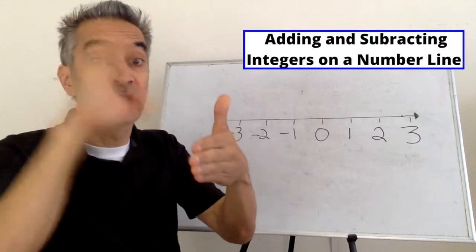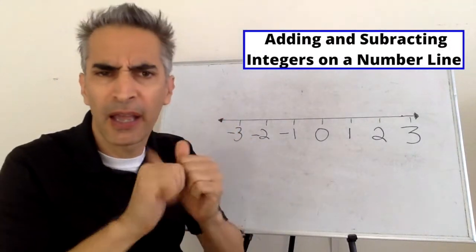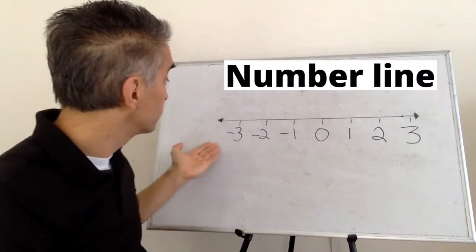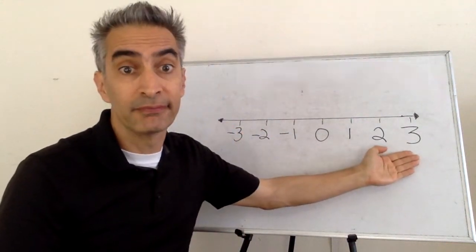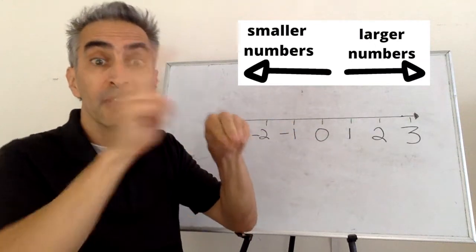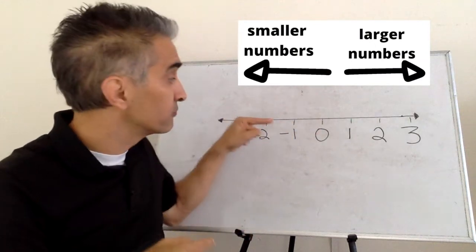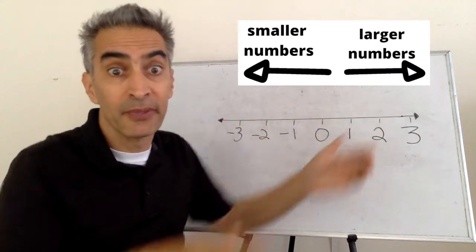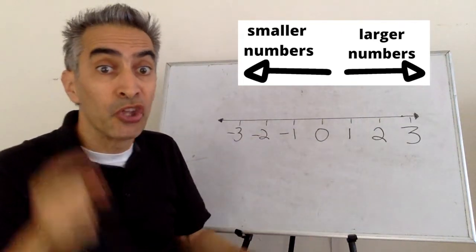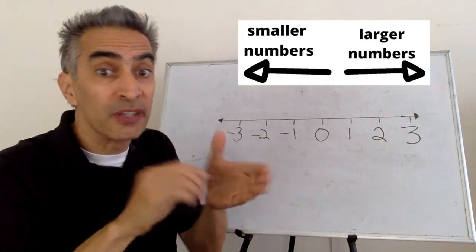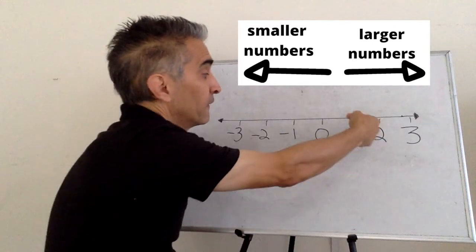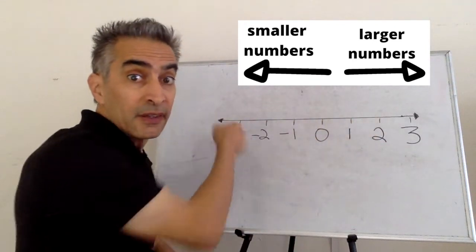Today we're going to learn how to add and subtract using a number line. Notice that the numbers get larger and larger as you go to the right, and notice that the numbers become smaller and smaller as you go to the left.